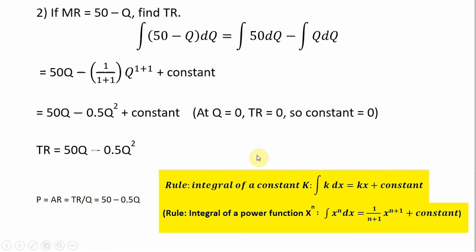We're going to use some of our rules here. The integral of a constant — in this case 50 — is going to be that constant times a variable, so 50Q is the integral of 50. Then we subtract the integral of Q. Here's a new rule: the integral of a power function. If we want the integral of X raised to the power of N, we follow this format — whatever X is raised to, we put in the denominator and add 1 to it, and we also add 1 to the exponent. In our case, Q is raised to the power of 1, so it's N plus 1, which is 1 plus 1.